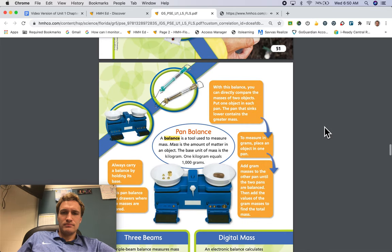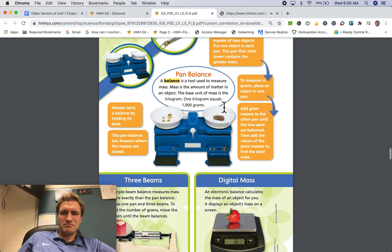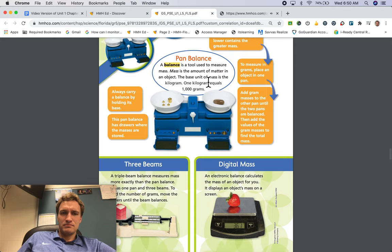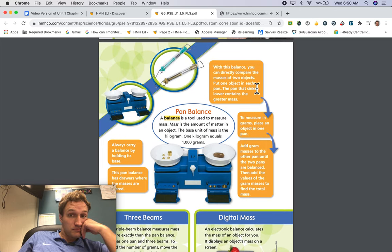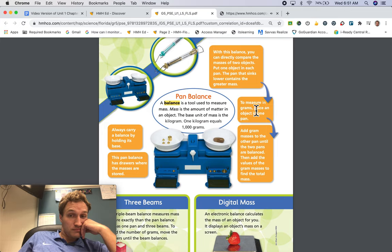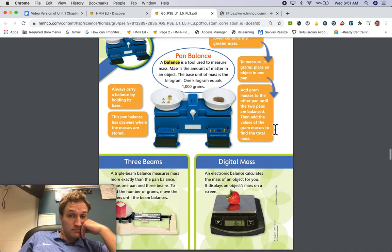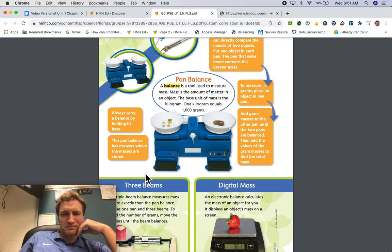Pan balance. A balance is a tool used to measure mass. Mass is the amount of matter in an object. The base unit of mass is the kilogram. One kilogram equals one thousand grams. With this balance, you can directly compare the masses of two objects. Put one object in each pan. The pan that sinks lower contains the greater mass. To measure in grams, place an object in one pan. Add gram masses to the other pan until the two pans are balanced. Then add the values of the gram masses to find the total mass. This pan balance has drawers where the masses are stored. Always carry a balance by holding its base.